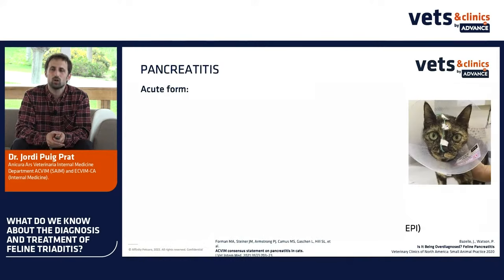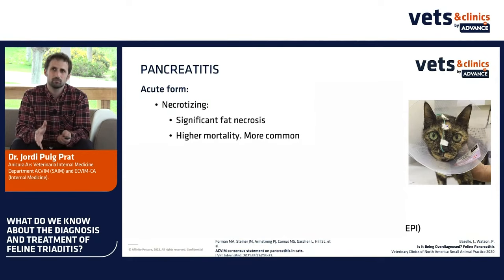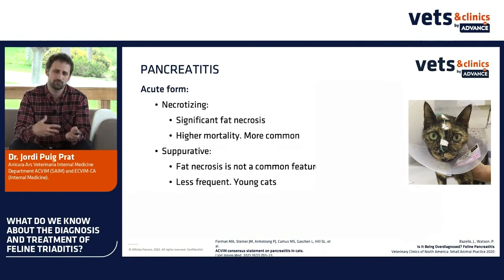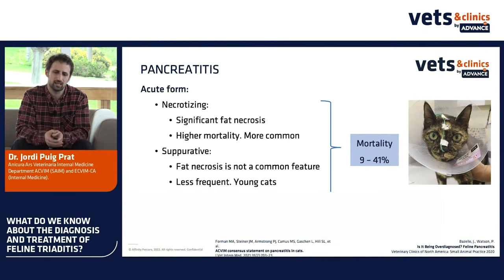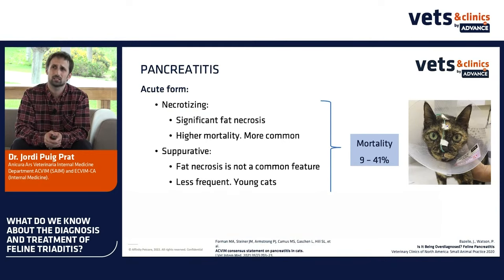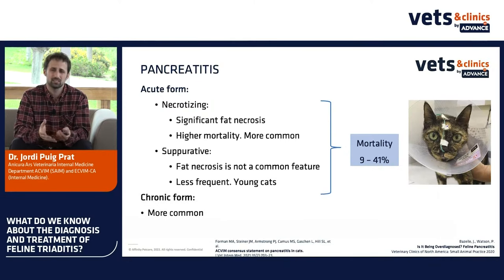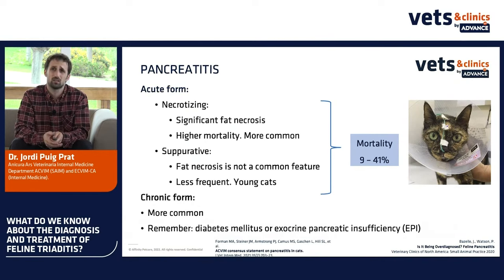Pancreatitis has an acute form. It can be necrotizing with higher mortality — that is the most common one. There is also a suppurative form that is less frequent, seen more in young cats. Overall, mortality ranges from 9 to 41% depending on the study. And remember we also have a chronic form — this is really important to understand because it is the most common. Diabetes and exocrine pancreatic insufficiency can be consequences of chronic pancreatitis in cats.